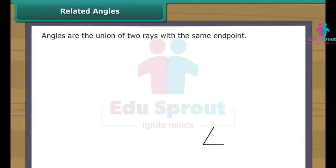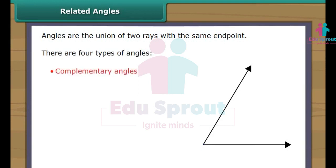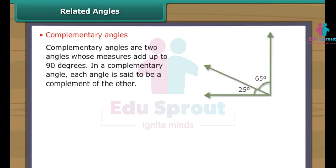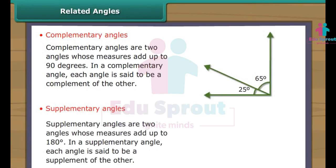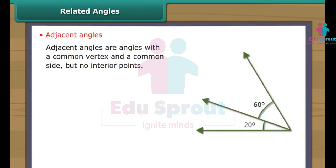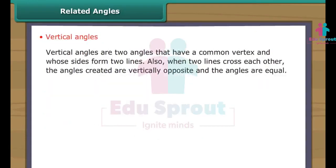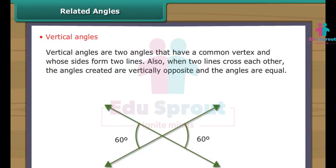An angle is defined as the union of two rays that have the same end point. The sides of the angles are the two rays, while the vertex is the common end point. There are four types of angles: complementary angles, supplementary angles, adjacent angles, and vertical angles. Complementary angles are two angles whose measures add up to 90 degrees. Supplementary angles are two angles whose measures add up to 180 degrees. Adjacent angles are angles with a common vertex and a common side but no interior points. A pair of adjacent angles with rays as the non-common sides is called a linear pair. Vertical angles are two angles that have a common vertex and whose sides form two lines.